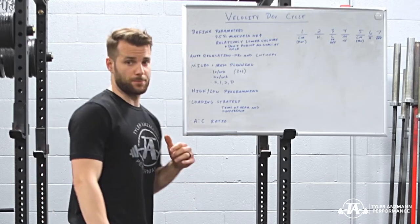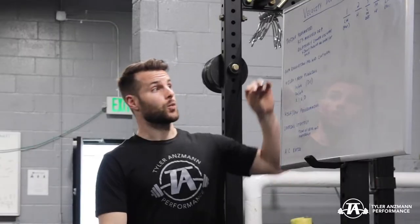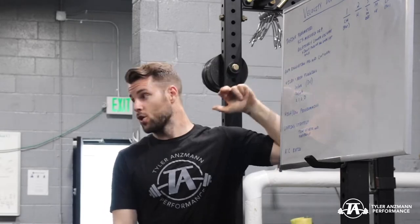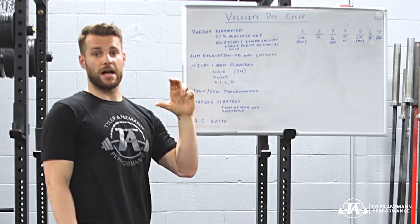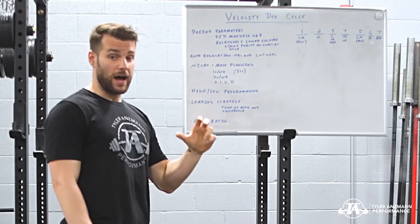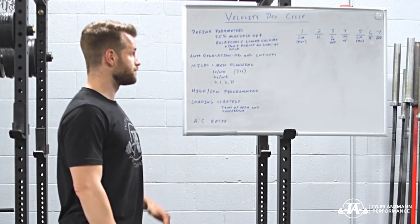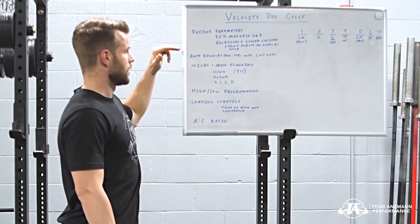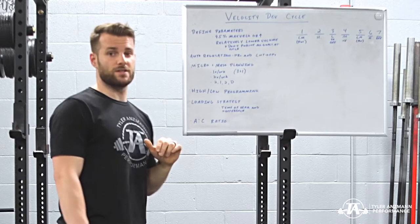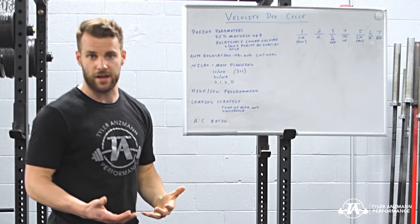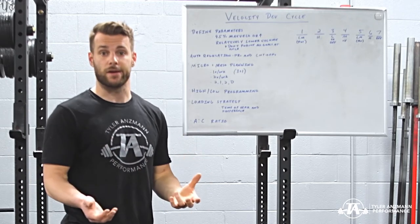The first thing we need to do is define the parameters — what develops velocity for us? We need to make sure we're at 95% of max velocity or higher. If we're not above that number, we're not developing velocity; we're developing capacity. If our goal is to develop velocity, 95% or higher is what we need to be. Because intensity and volume have an inverse relationship, we need to have relatively lower volume than we would during a pitch design cycle, command cycle, or a combo pitch design and command cycle.